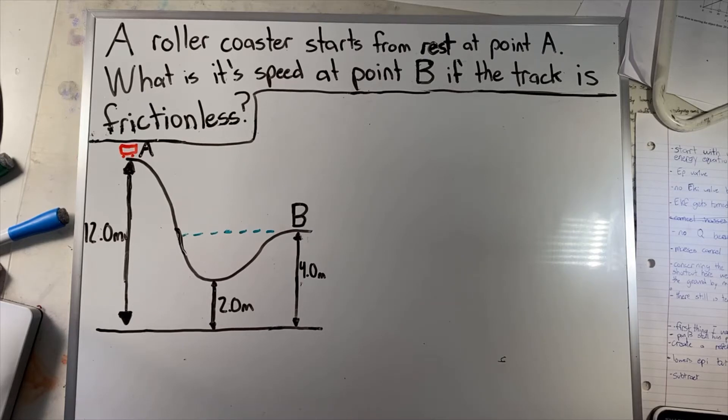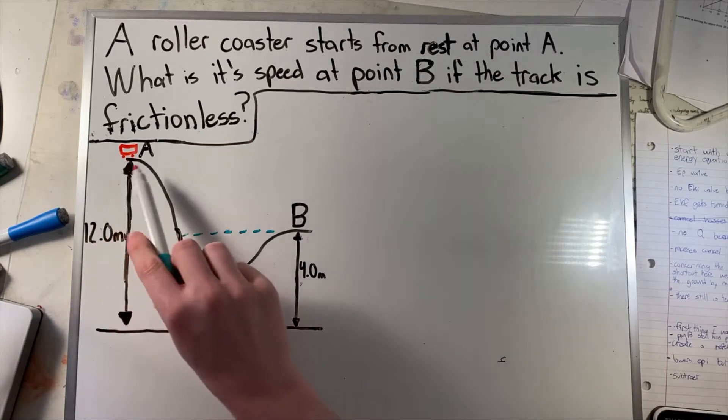So in order to solve this problem, the first thing we have to do is write out our law of conservation of energy equation. We look at where the roller coaster starts, which is point A.